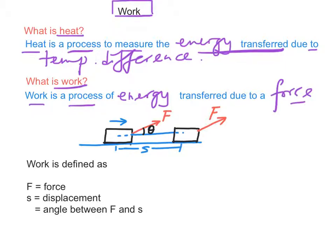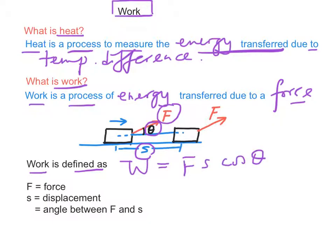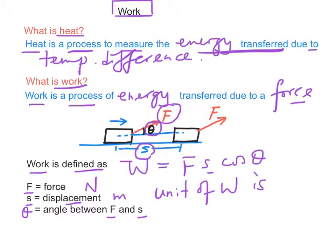In the diagram, a body is applied by a force F through a displacement S. F and S make an angle theta. The work done by the force F is defined as W equal to Fs cos theta, where F is the force in Newtons, S is the displacement of the body in meters, and theta is the angle between F and S. Therefore, the unit of work is Newton meter.